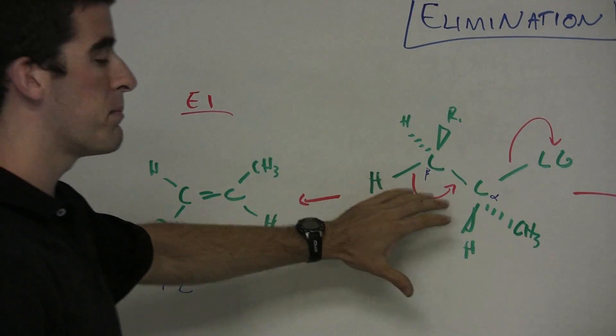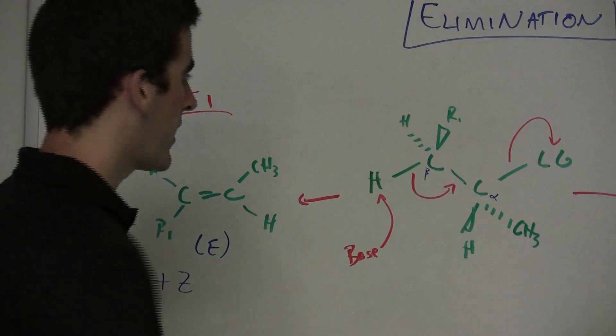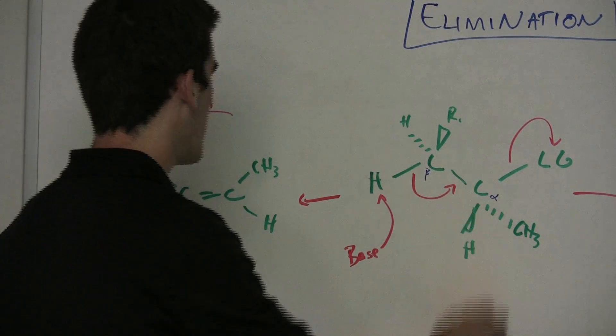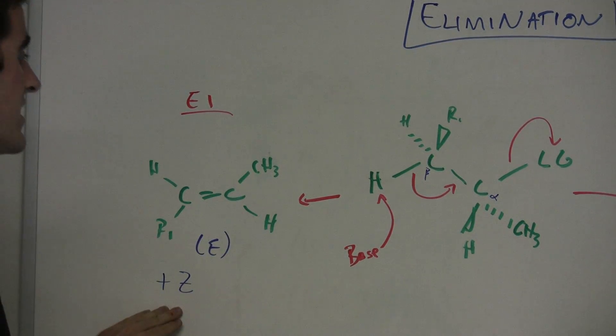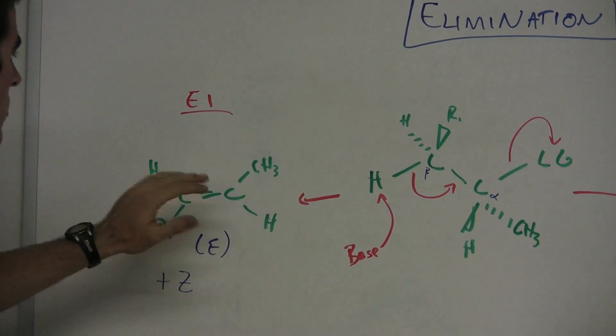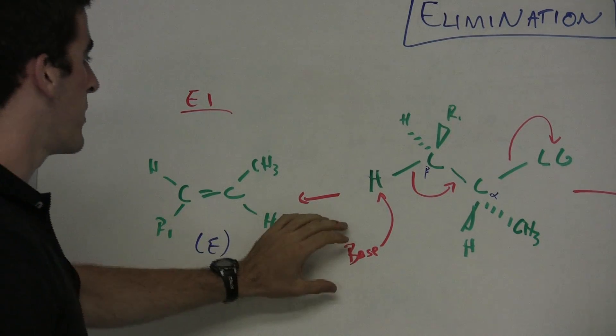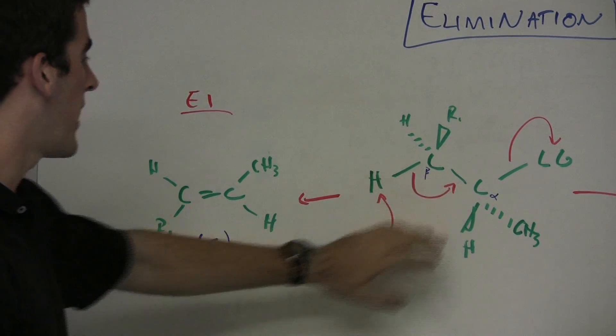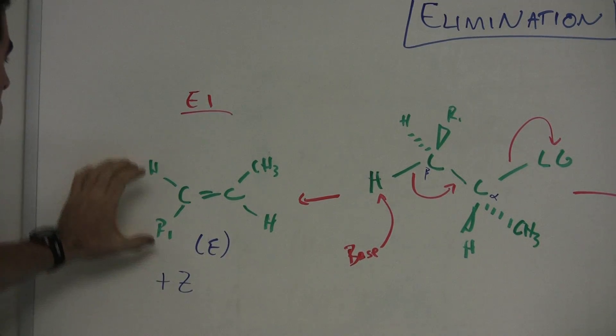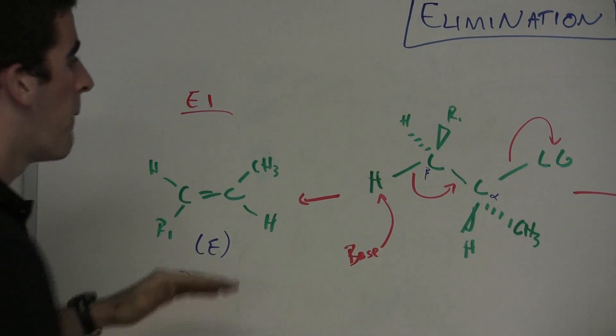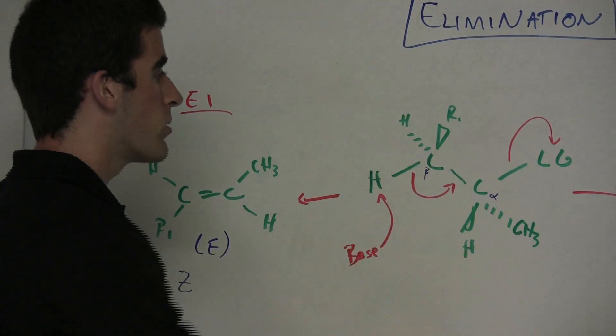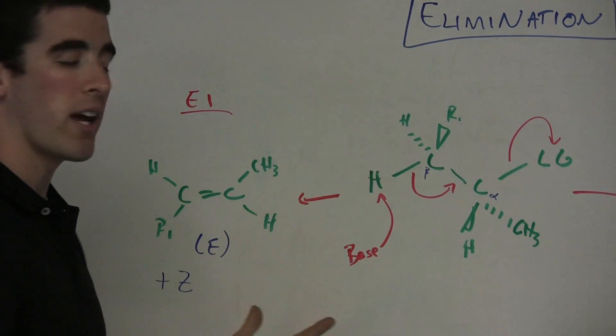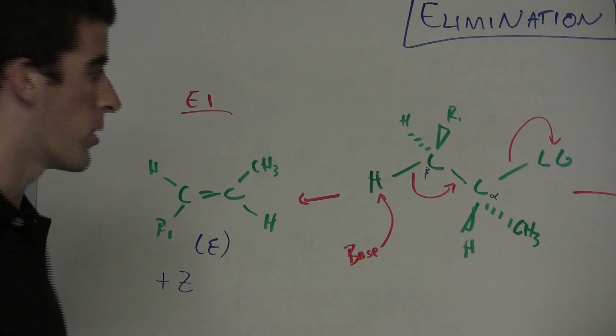But remember, there can be rotation between that alpha and beta carbon, this bond right here, which would again lead to the Z diastereomer. But the original product formed here is the base coming off, forming down that double bond. It's this E diastereomer on the opposite side of the double bond. But this bond here can be rotating, and so elimination of the other H would cause the other diastereomer to form.